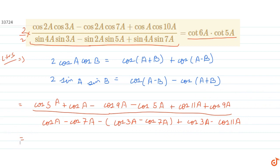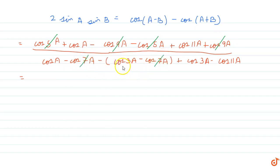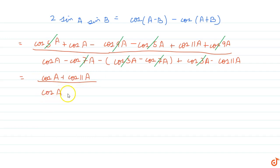Simplifying this: in the numerator, cos(5a) and -cos(5a) cancel, and -cos(9a) and cos(9a) cancel. In the denominator, the two -cos(7a) terms become +cos(7a) and cancel, and -cos(3a) and +cos(3a) cancel. So we get cos(a) + cos(11a) in the numerator, divided by cos(a) - cos(11a) in the denominator.